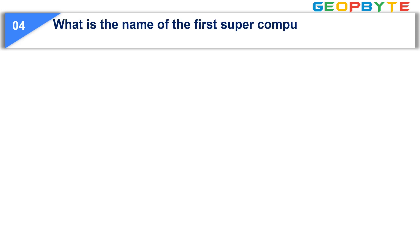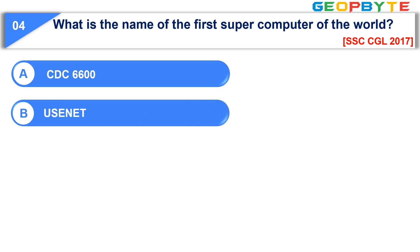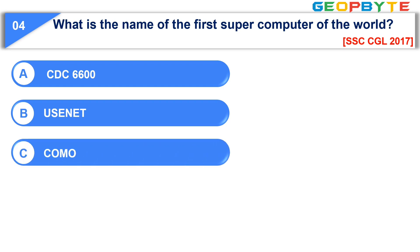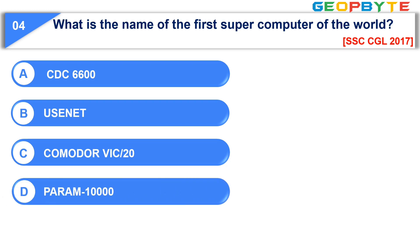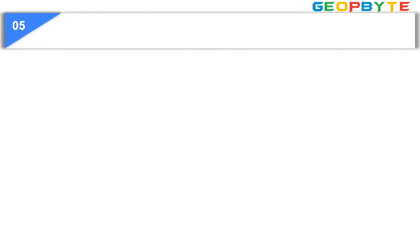Question number four: What is the name of the first supercomputer of the world? Option A: CDC 6600; option B: Usenet; option C: Commodore VIC-20; option D: Param 10000; option E: none of these. The correct answer is option A: CDC 6600.